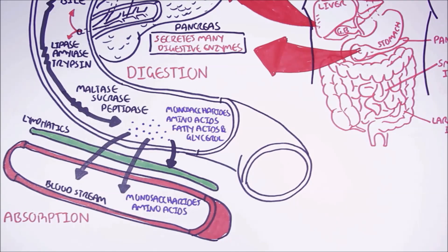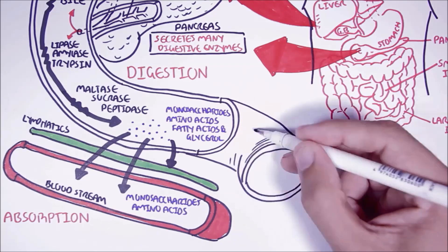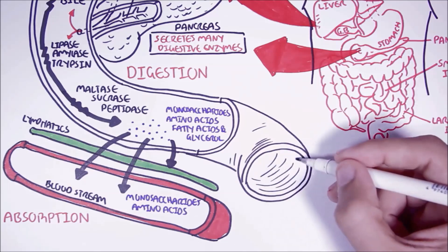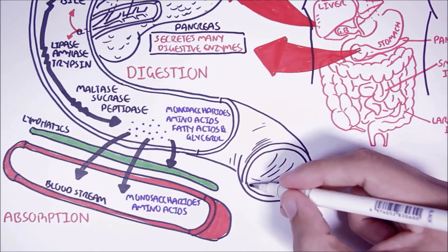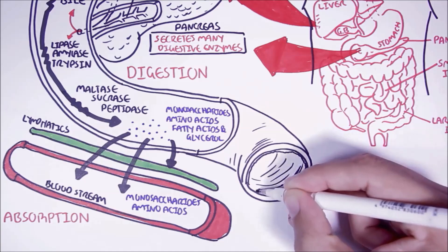From all this we can see how the small intestine is the major place for the digestion and absorption of food. Therefore, it is important that we understand more about the histology of this organ.